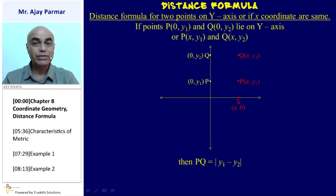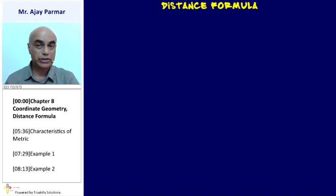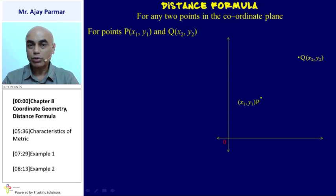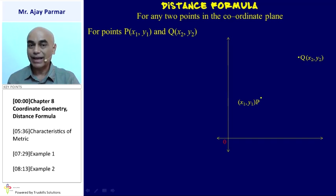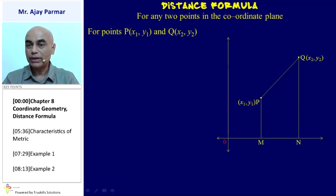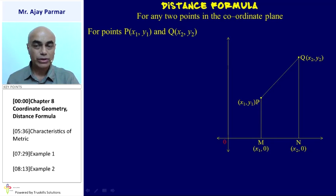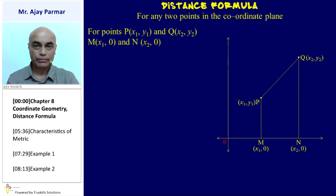Both of these were situations where specific conditions were given. Now supposing no such condition is there — for any two points in the coordinate plane, P(x1, y1) and Q(x2, y2). We drop perpendiculars from P and Q on the x-axis and call those feet M and N, so M is (x1, 0) and N is (x2, 0), and the distance MN is |x1 − x2|.